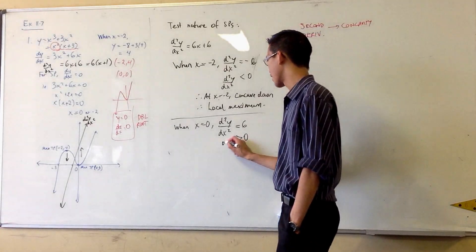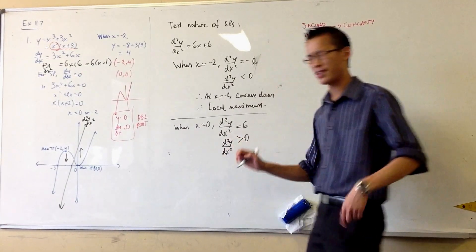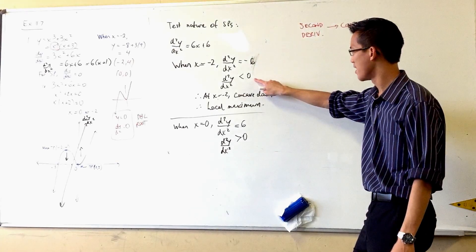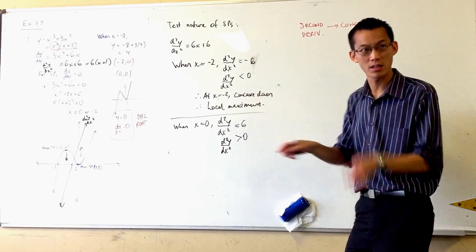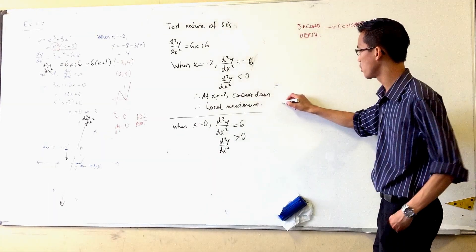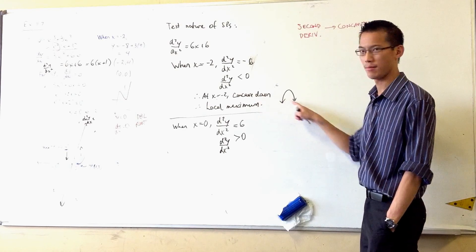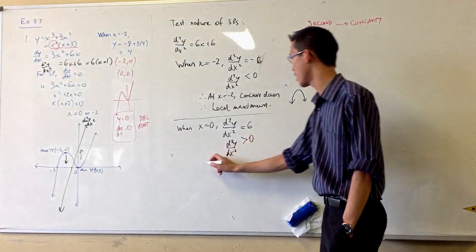Now, I know I got confused when I was learning this the first time because it seems backwards. Concave down, negative, right? That means maximum. That's because it's facing down. So the picture you want to have in your head is this - that's a maximum. You can see that's a maximum. So concave down means maximum. Here, you're concave up.